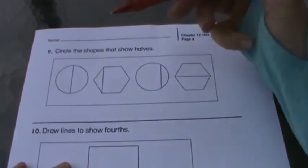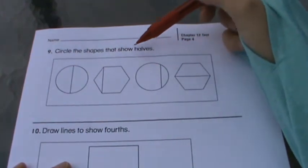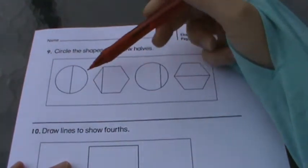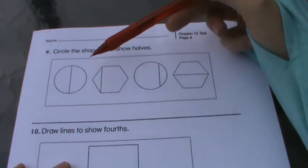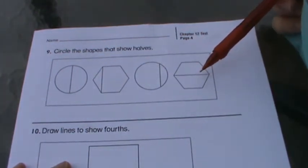Number nine, circle the shapes that show halves. There might be one, there might be four. You circle all the shapes that are showing you halves.